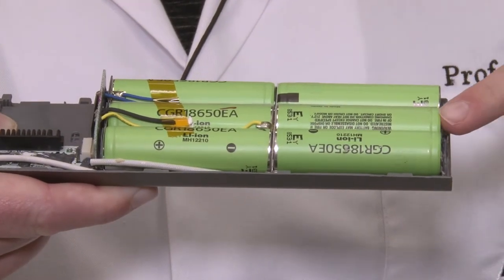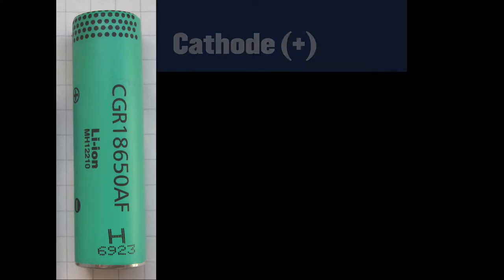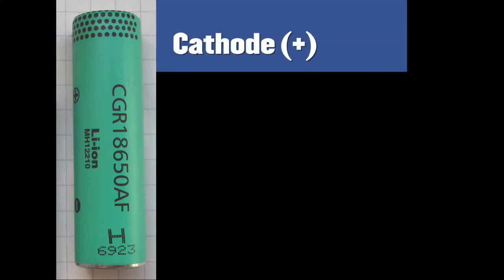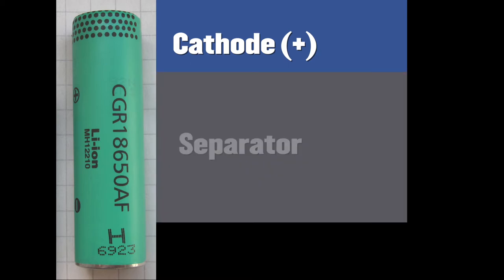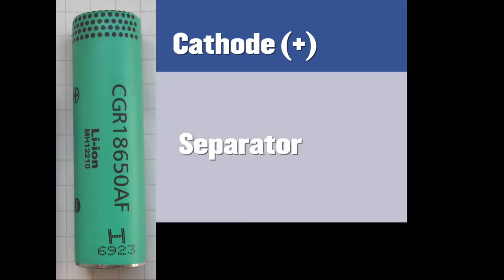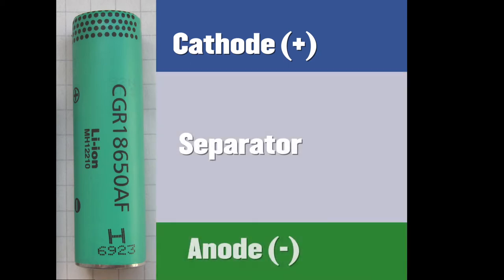A battery is made out of particles. The cathode is made out of this grounded material, usually lithium cobalt oxide or lithium manganese oxide. The anode is made out usually of graphite particles, of carbon, which stores the lithium.